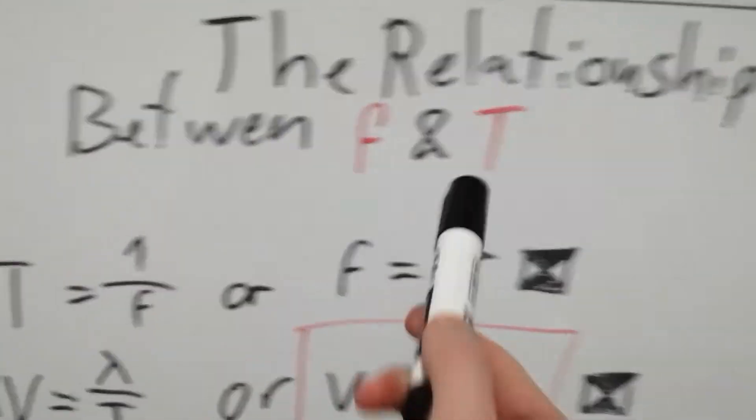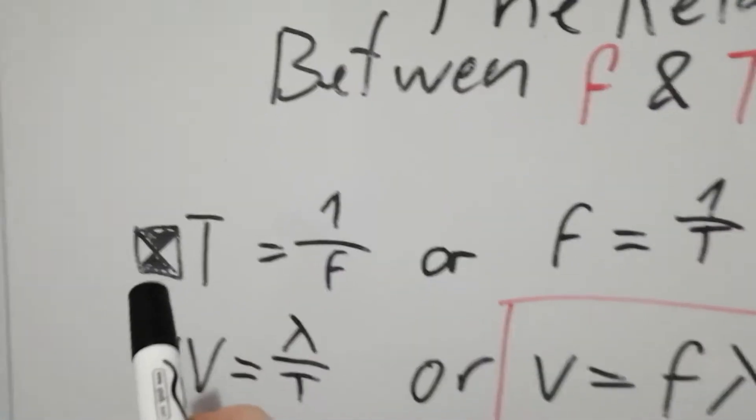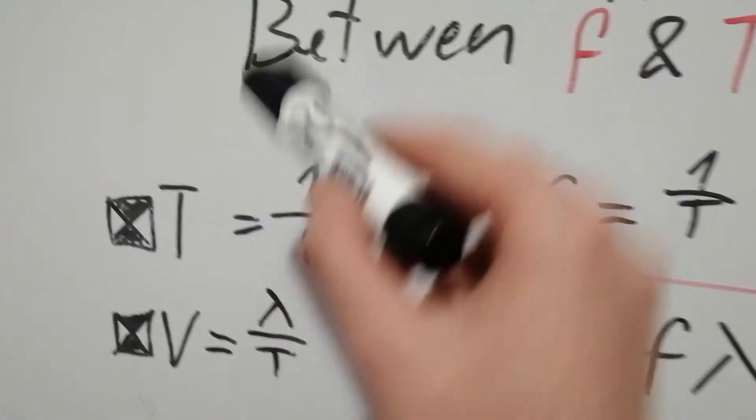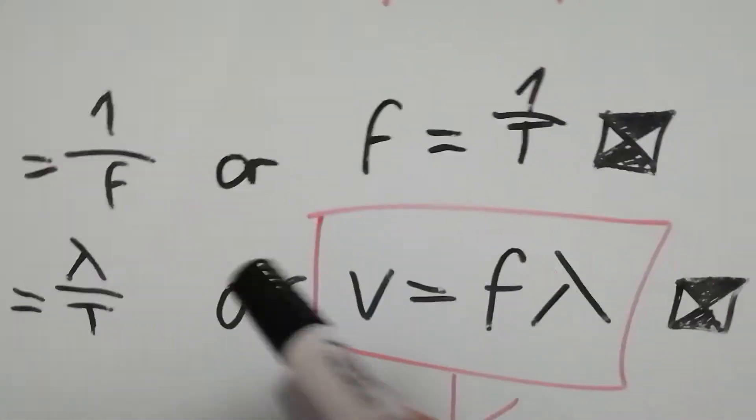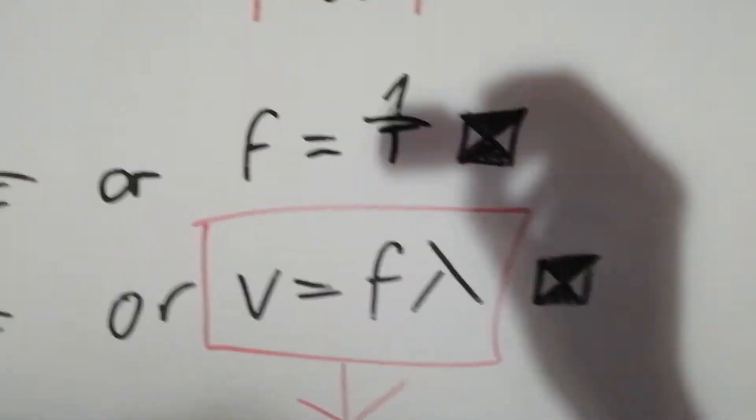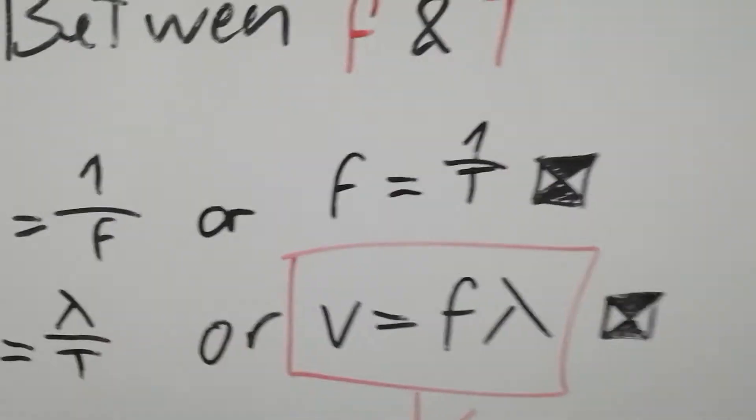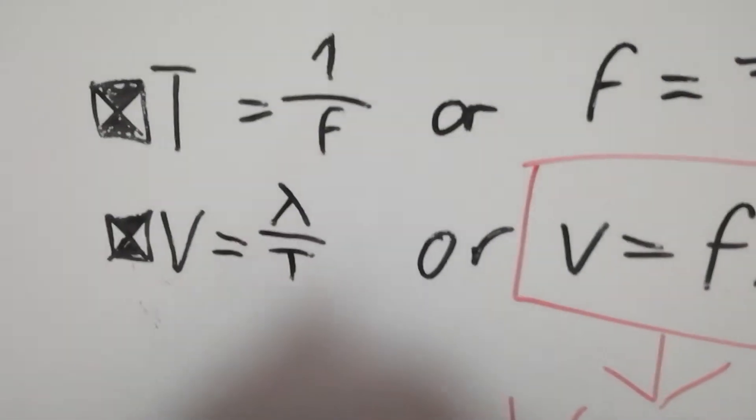Now for the relationship between f and t. t is equal to 1 over f, or f is equal to 1 over t. Basically they're inversely proportional.